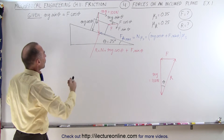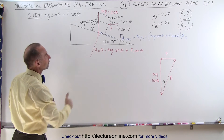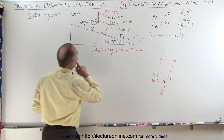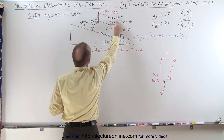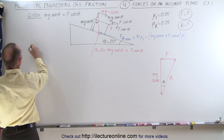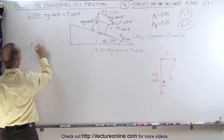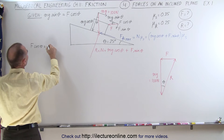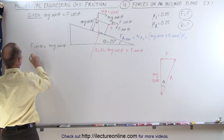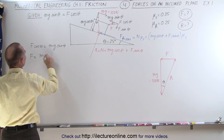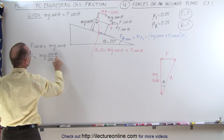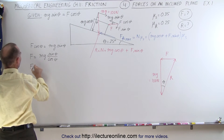First, let us use the traditional method to find the force and the reaction force. We can say that this component here must equal that component there. F times the cosine of theta must equal Mg times the sine of theta. In other words, F is equal to the weight Mg times the sine of theta over the cosine of theta, which of course equals Mg times the tangent of theta.